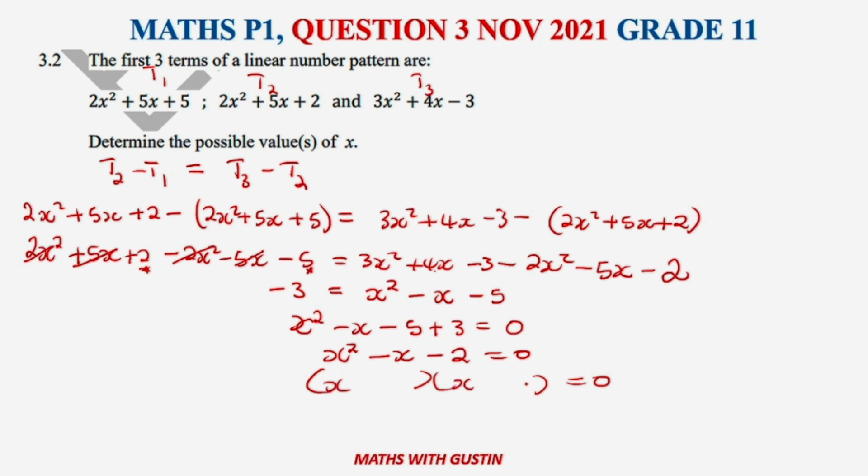Now we need to factorize. What are the two numbers when you multiply them they give you -2? It's 2 and 1. Therefore (x+1)(x-2)=0, so x equals -1 or x equals 2.